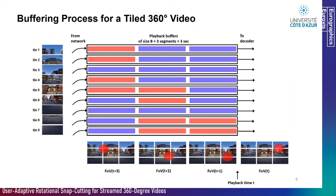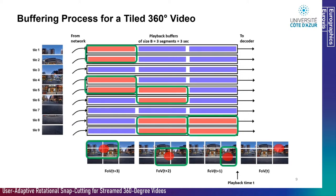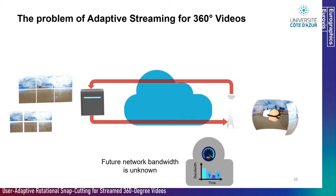In this figure, the segment of each tile can be downloaded either in high quality (red) or low quality (purple). Ideally, tiles in high quality must match the user's field of view at their time of playback — achievable only if we predict the field of view position correctly. The challenge is that at download time, the future network bandwidth and user motion are unknown. One solution is to predict both using recurrent deep neural networks, but predicting such time series is difficult and can be done only over short horizons.